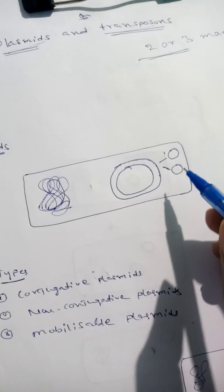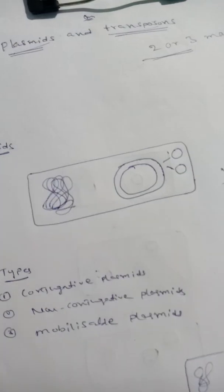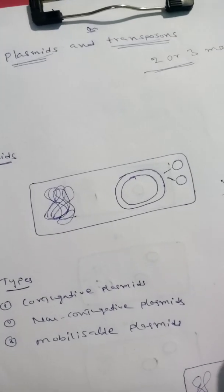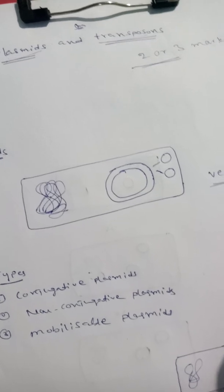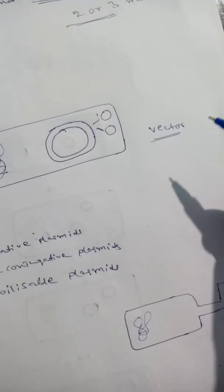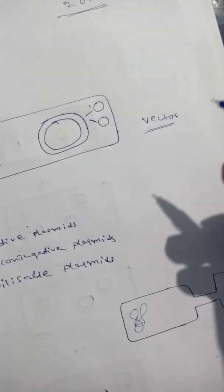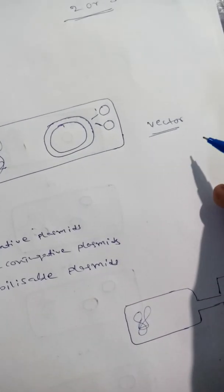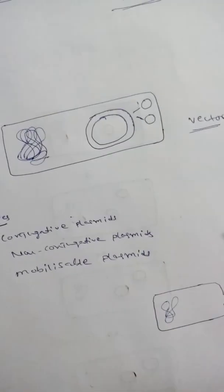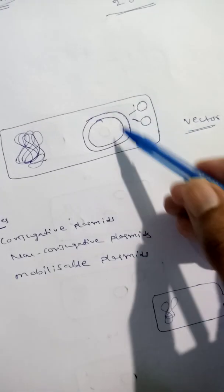This plasmid DNA also acts as a vector. We use this vector in recombinant DNA technology for the production of proteins, vaccines, insulin, hepatitis B vaccine, and other blood clotting factors. We use plasmid DNA as a vector in these applications.